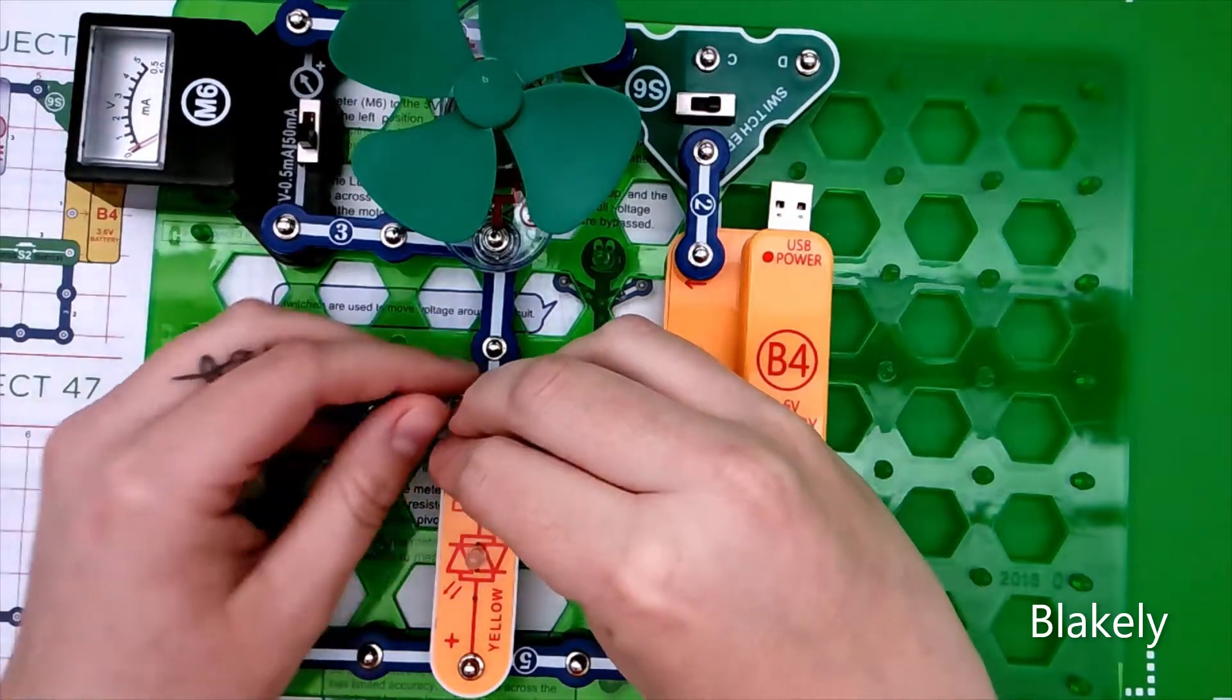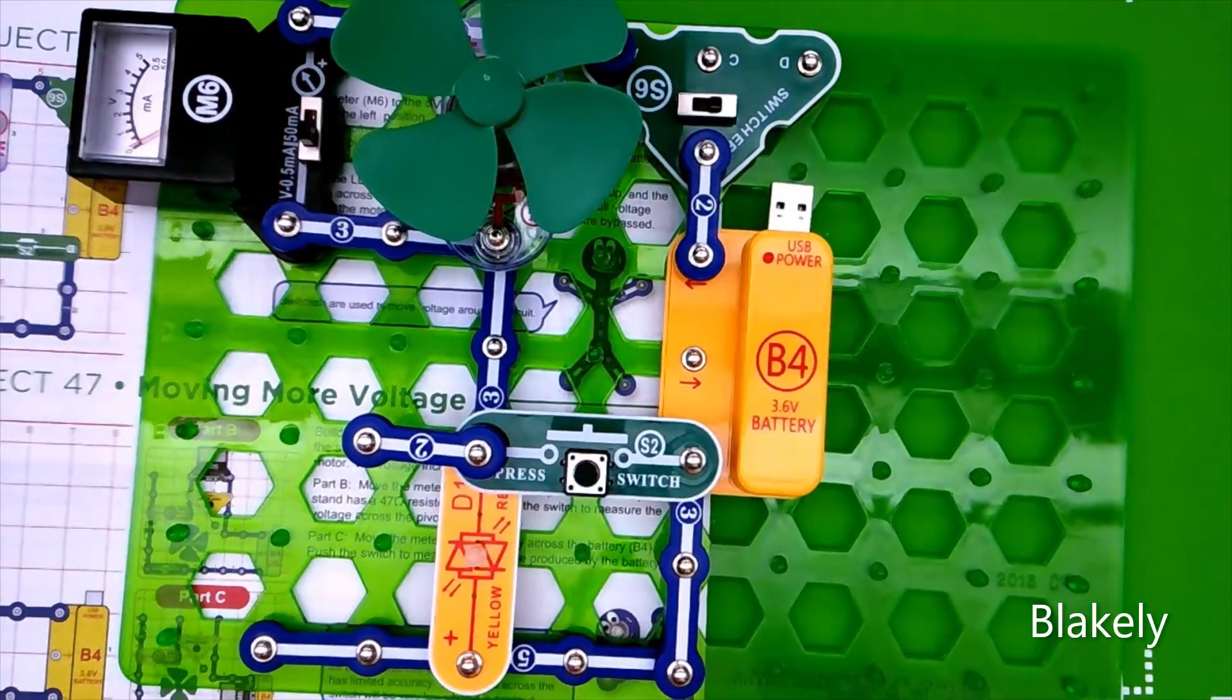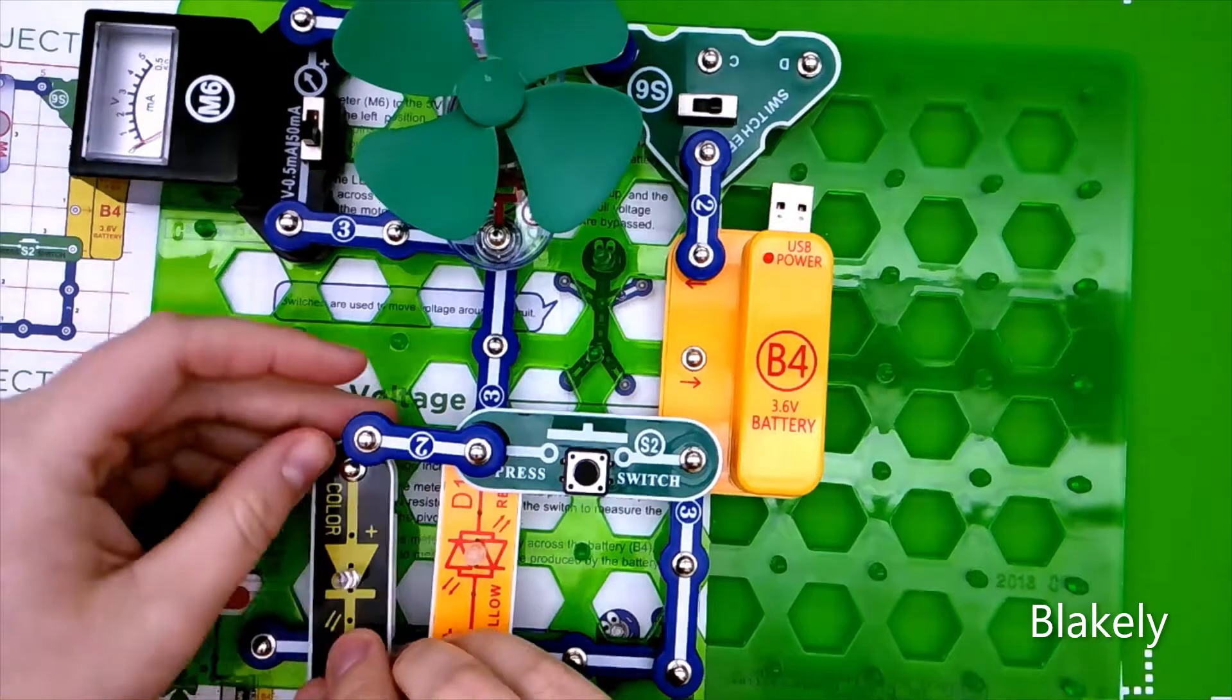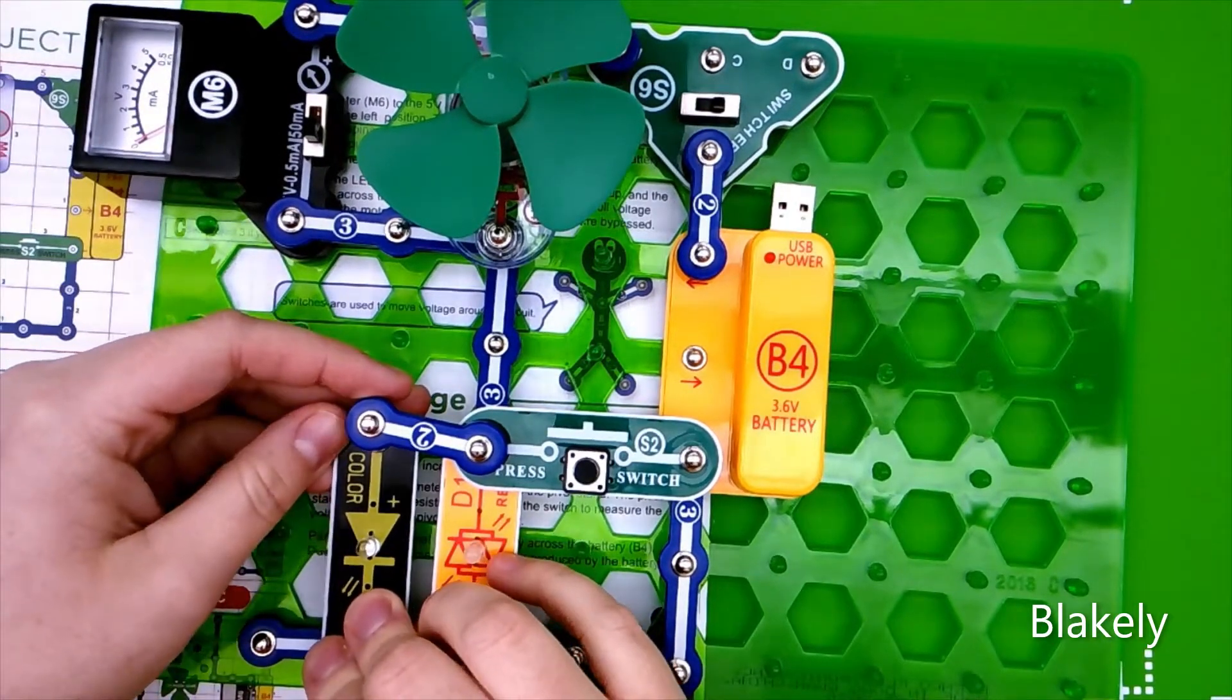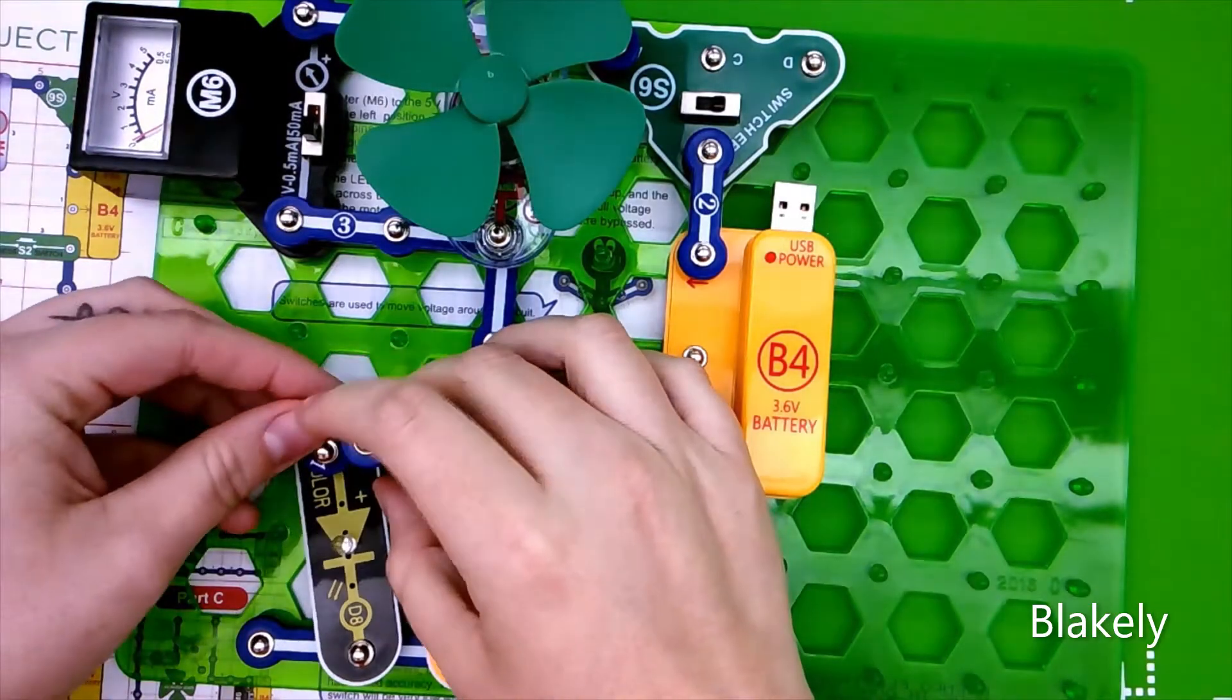Then you're going to have another two wire right here connecting this press switch to D8, and we're going to use one of the one wires to connect it like that.